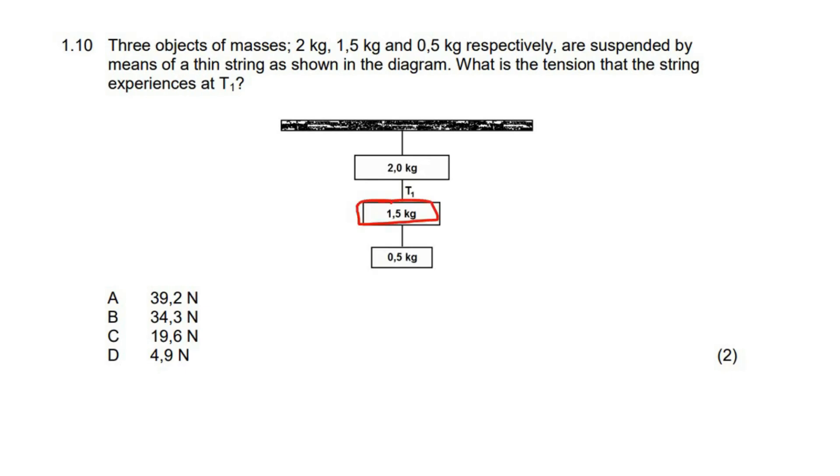If we look at this 1.5 kilogram object, we know that it has to carry its own weight. So we can say the FG of the 1.5, but it also has to carry this 0.5 kilogram. So it does that through the tension in this rope. So we're going to put a tension in that rope.